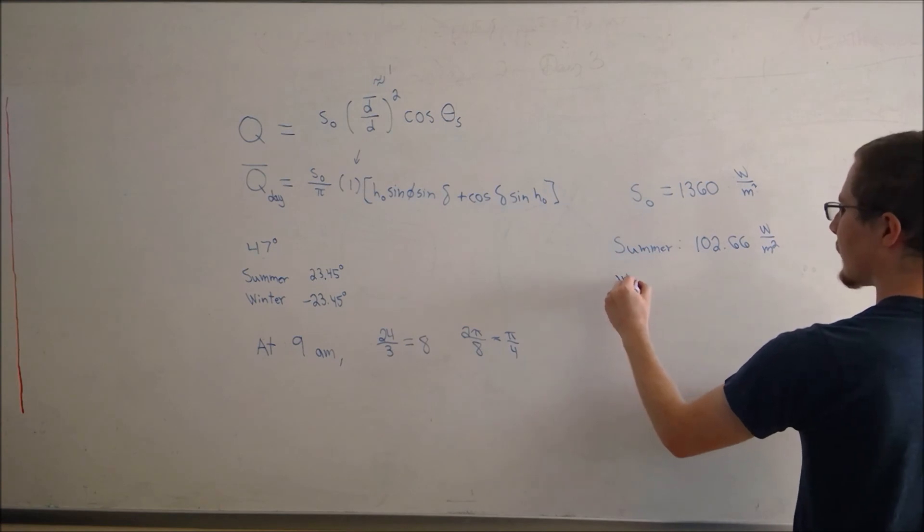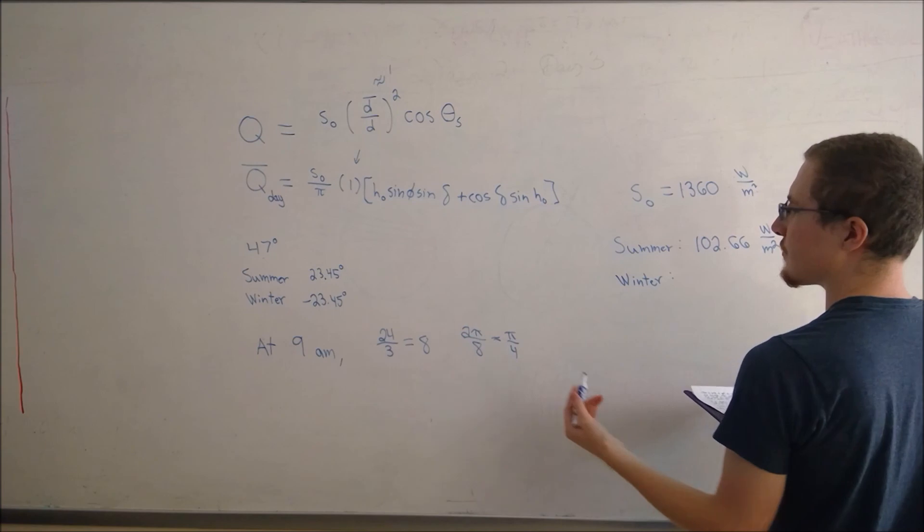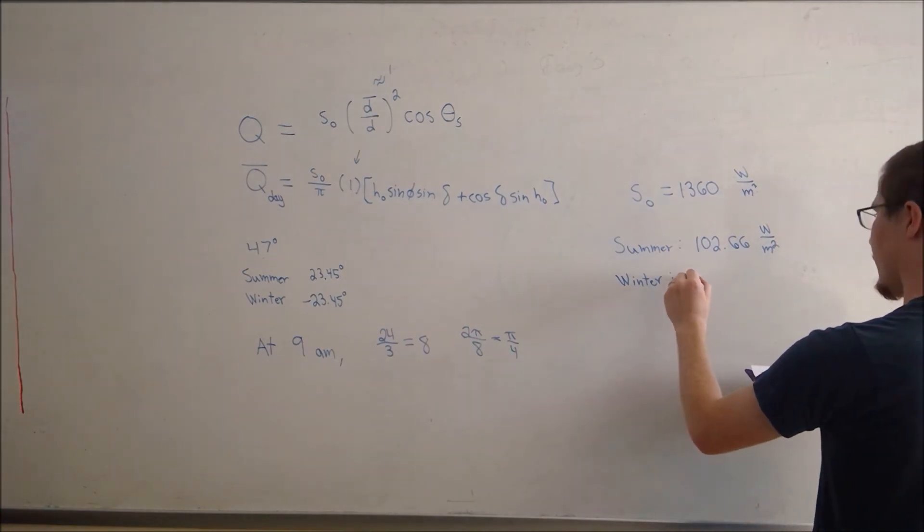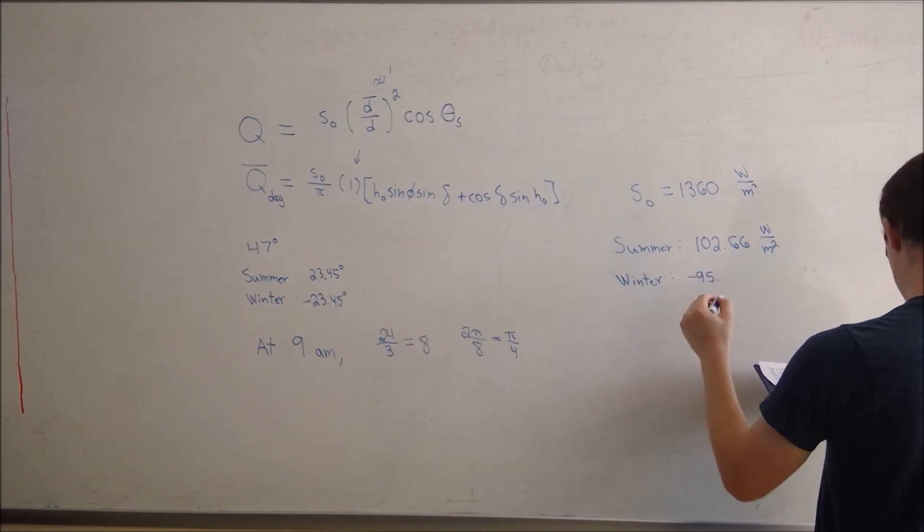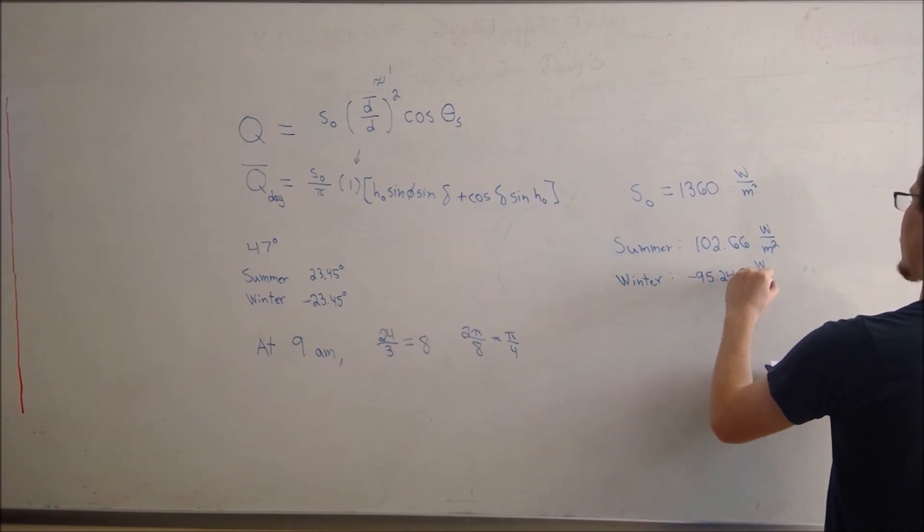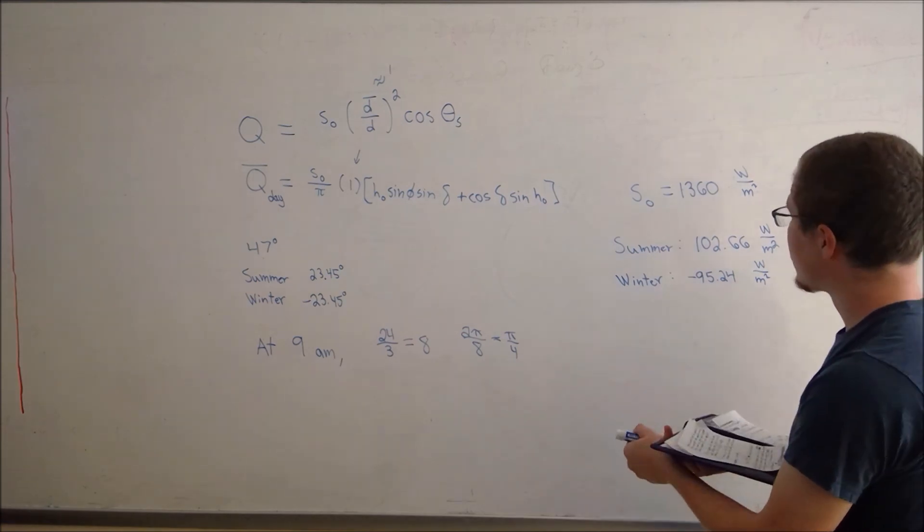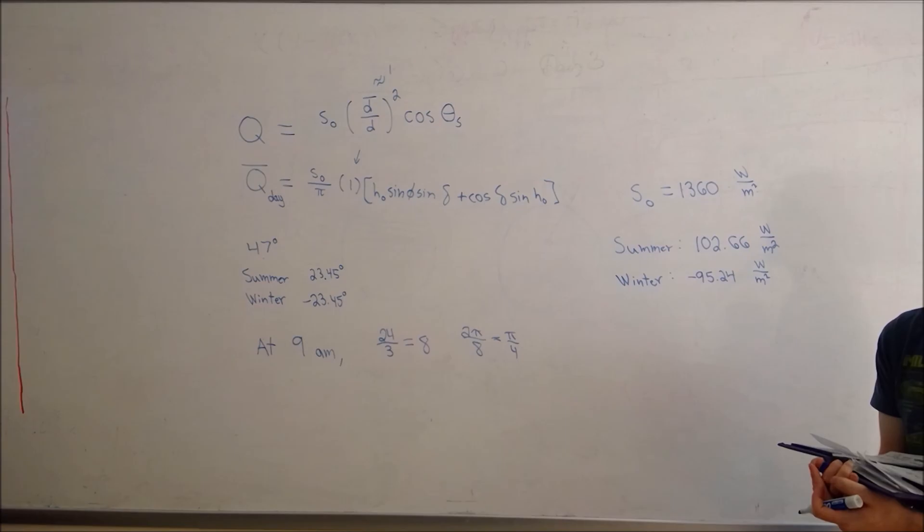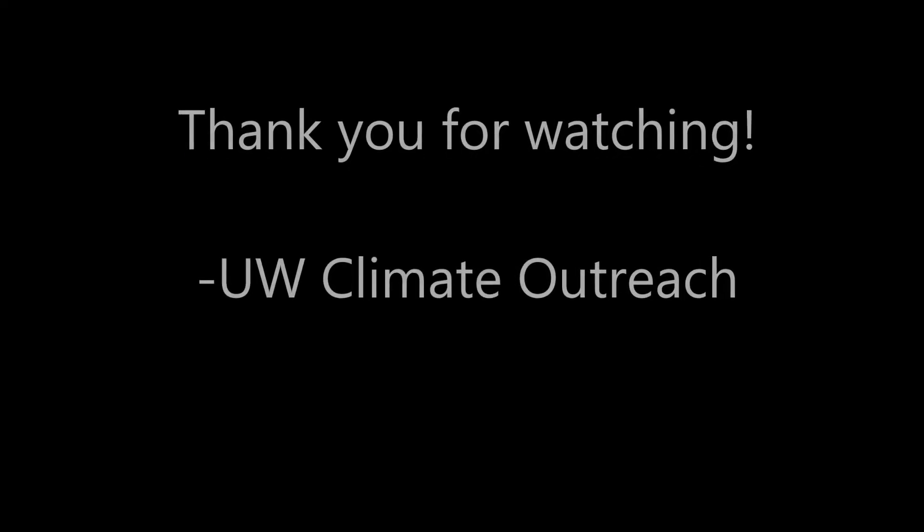And in the winter, this value, the only difference is the declination angle goes to a negative 23.45 degrees and we come to a value of 95.24 watts per meter squared. And that was the example. Thank you for listening.